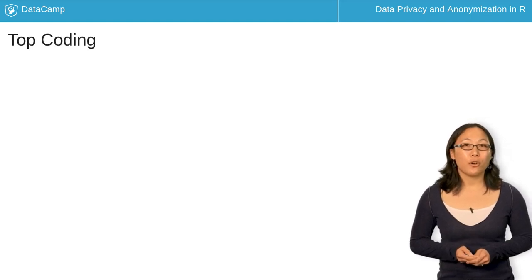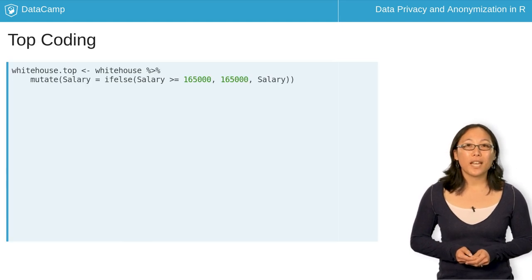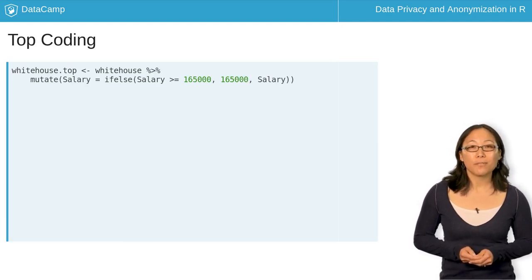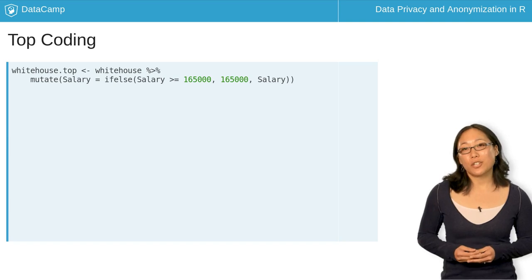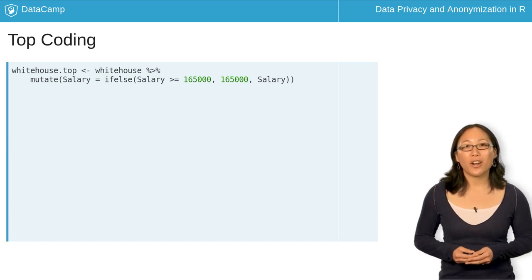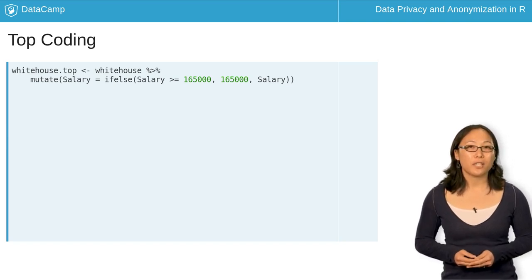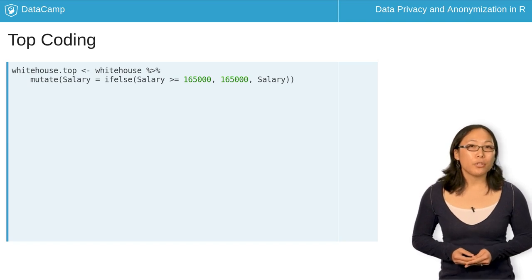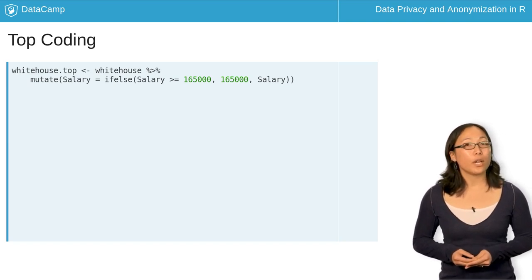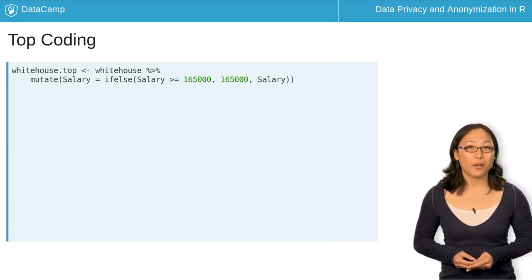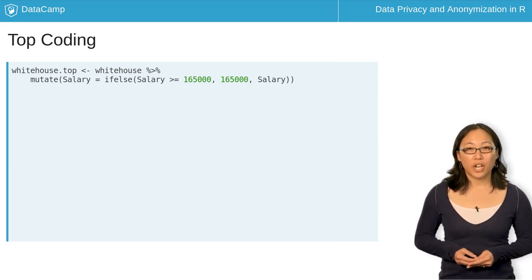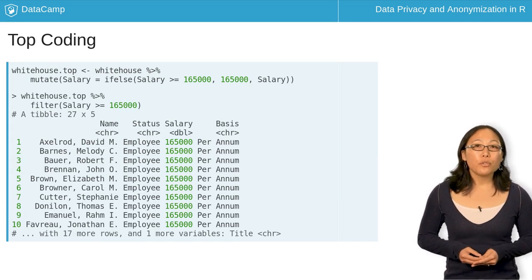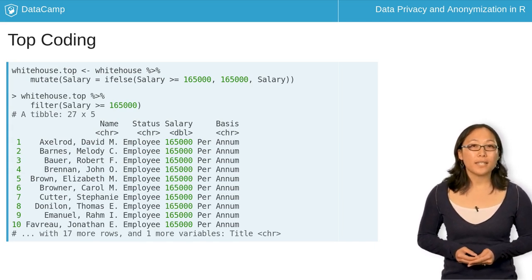Another approach that allows you to alter the data is top coding. We will use the mutate and if-else functions. Based on the histogram, we want to top code around $165,000. For our example, we'll top code at greater than or equal to $165,000 and call our new dataset whitehouse.gen. If we use filter, we can see that 27 observations fall in this category.